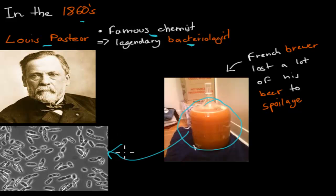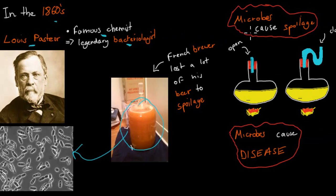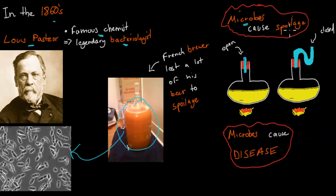When Louis Pasteur looked at all of those beer samples under the microscope, he saw lots and lots of microbes. And what he said was, there must be these microbes that are causing the spoilage of the wine or beer — which was something completely new, because we knew microbes existed back then, but we had no idea they would cause disease or spoilage. But Louis Pasteur was adamant: it was the microbes causing the spoilage.